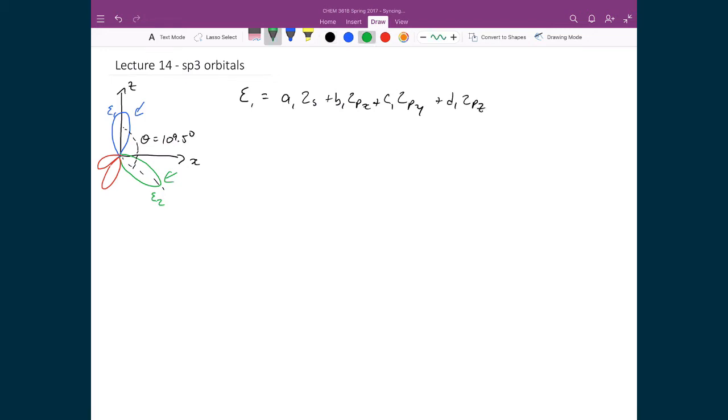Since it's pointing along the z-axis, that means there's no possibility of having any mixing of the px or py, because that would mean that orbital would have some directionality pointing in each of those Cartesian directions. We know that it doesn't since we've oriented it along the z-axis, so it can't be pointing in that way. That means our ξ1 is only going to have two terms.